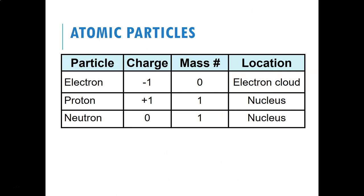At this point, we have electrons, which are negatively charged — they're so tiny that to make our life easy, we say they have a mass of zero. Protons are positively charged, and we're going to assign them a mass of one. This is not one gram or one kilogram — it's what we call an atomic mass unit, an arbitrary unit we made just to make our calculations easy. So we say a proton weighs one. A neutron has no charge — it's neutral — and we say it has a mass of one as well. In real life, the proton and neutron are not quite exactly the same mass, but they're so close that we just call them both one.